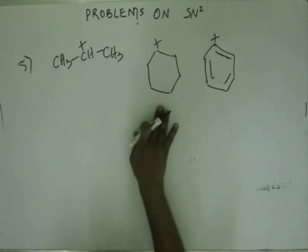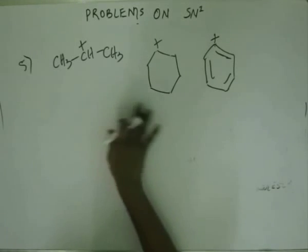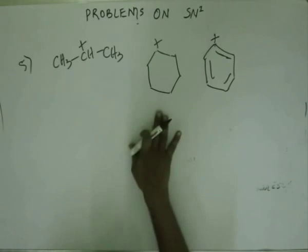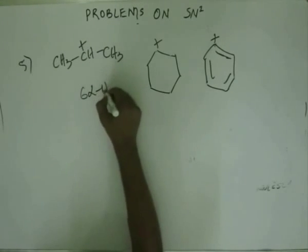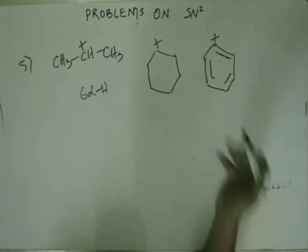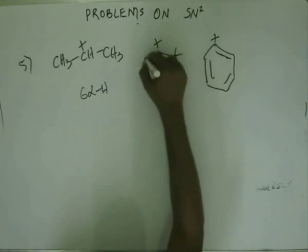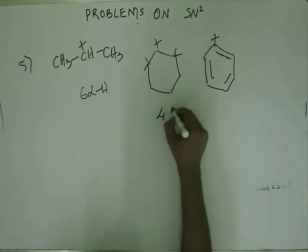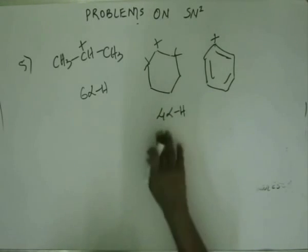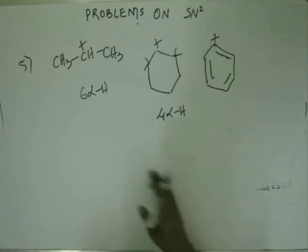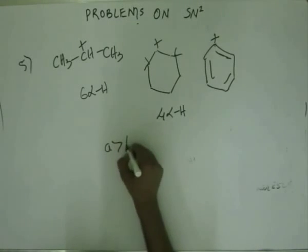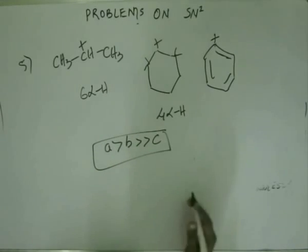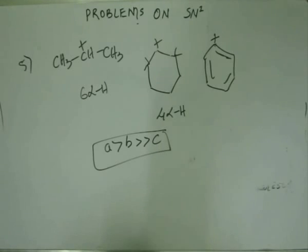For deciding the order of the other two substrates, it is simple. We start with resonance — there is no resonance. Then we come down to hyperconjugation. Is there hyperconjugation? Yes, there is hyperconjugation from both sides in substrate A, with six alpha hydrogens — three on each side. For substrate B, there is also hyperconjugation with two alpha hydrogens on both sides, making a count of four. So the count is six, four, and zero — the order of stability is A greater than B greater than C. Practically, C will not have any SN1 reaction at all.